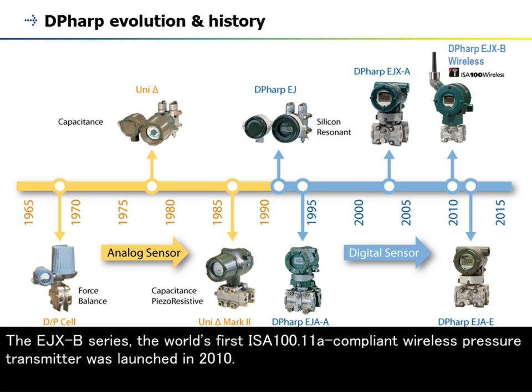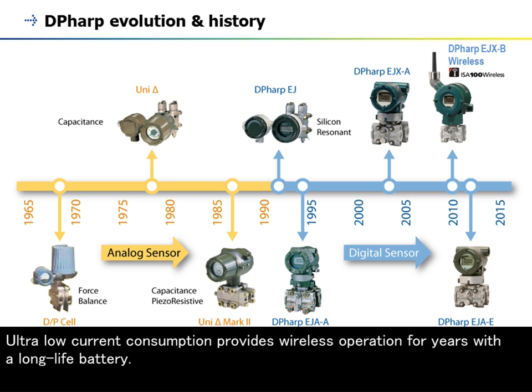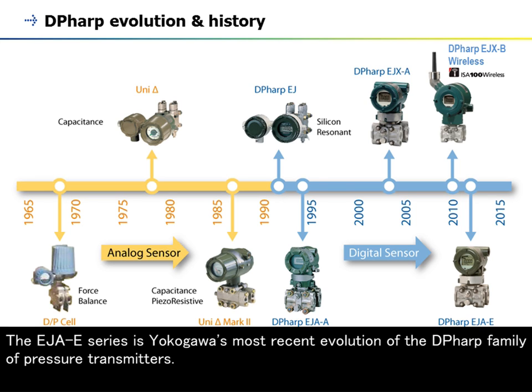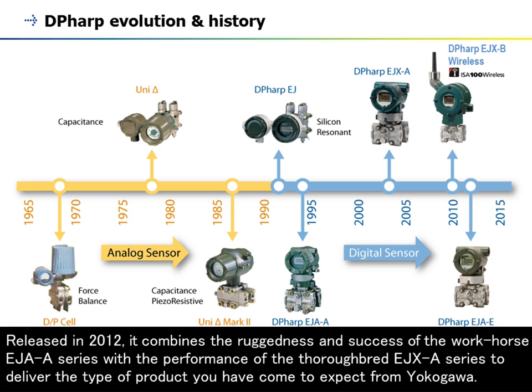The EJA series includes the world's first ISA 100.11A compliant wireless pressure transmitter, launched in 2010. Ultra-low current consumption provides wireless operation for years with a long-life battery. Released in 2012, the most recent evolution of the DP-HARP family combines the ruggedness of the EJA series with the performance of the EJX series to deliver the quality product you have come to expect from Yokogawa.